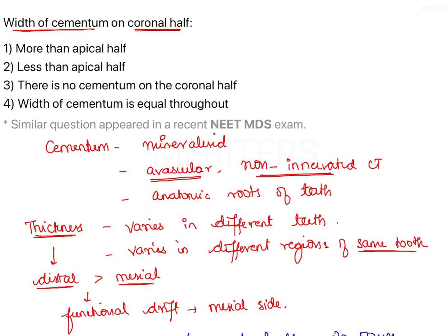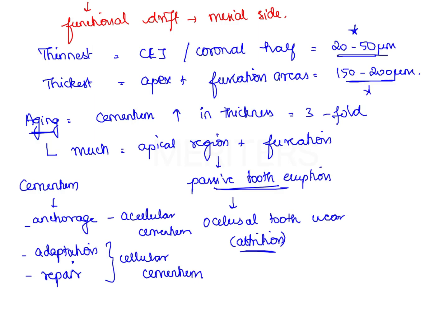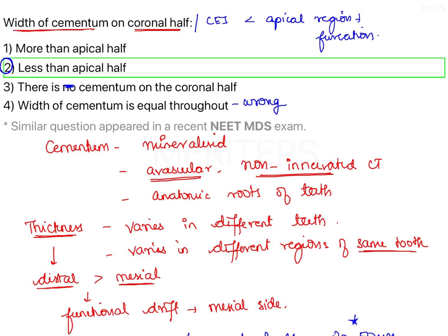Getting back to the question: the coronal half denotes the region near the CEJ towards the cervical region. The width of cementum on the coronal half is less than in the apical region and furcation areas — 20 to 50 micrometers at CEJ versus 150 to 200 micrometers at the apical third. Option 3 is wrong as cementum is present on the coronal half (mostly acellular). Option 4 is wrong as thickness is not equal throughout. Therefore, option 2 — width of cementum on the coronal half is less than on the apical half — is the correct answer.